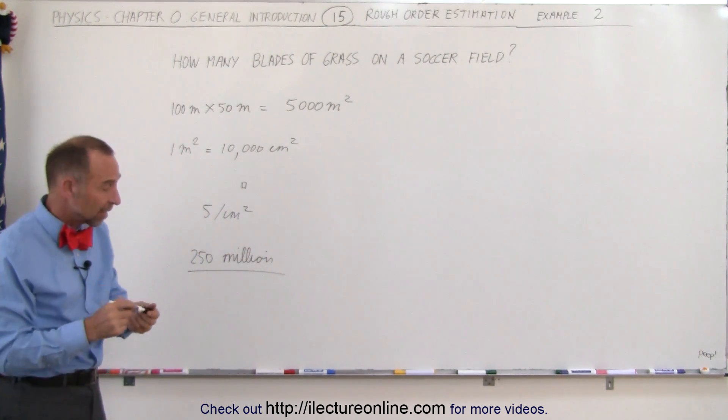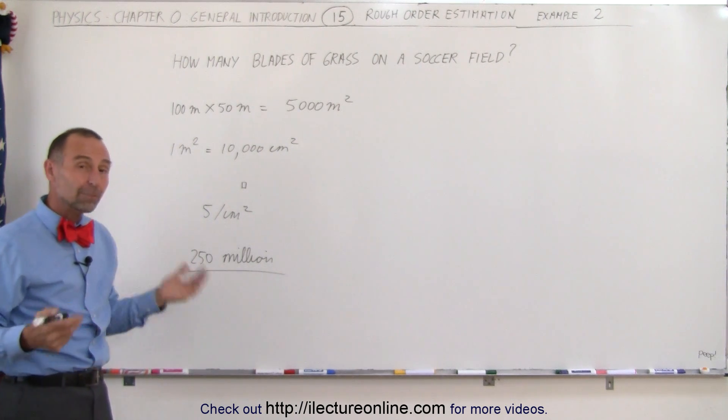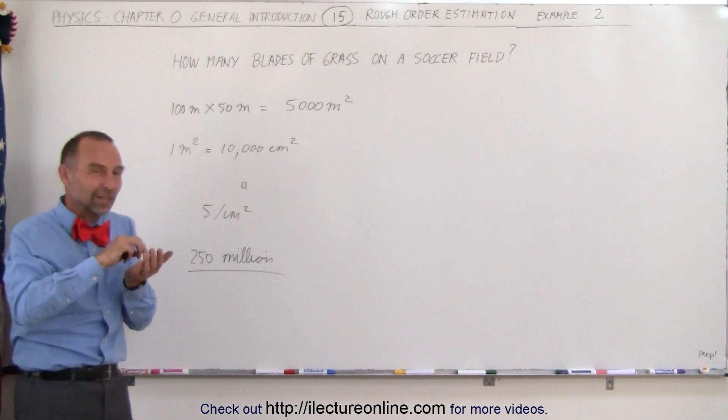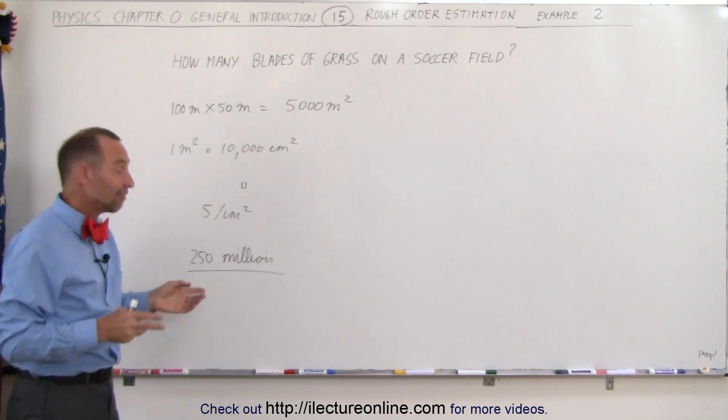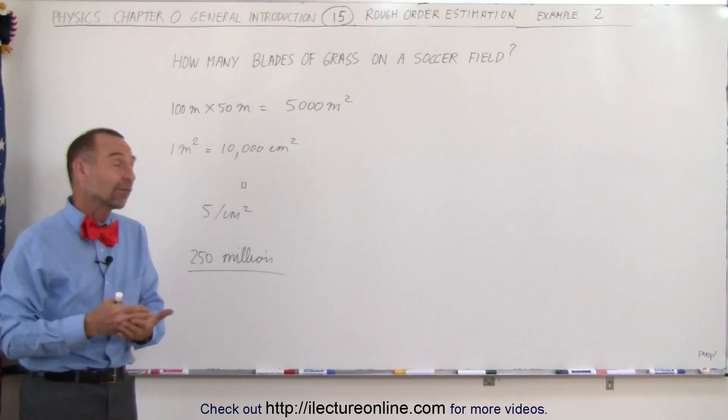Now does that mean that it could be 100 million, 500 million, 50 million? Yes, it probably could be. But if you were to calculate it and your answer came out to be 5,000, you should be very suspicious of the answer. And that's the concept of a rough order of estimation.